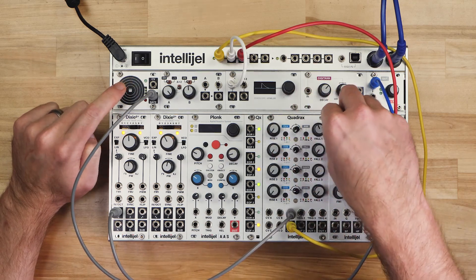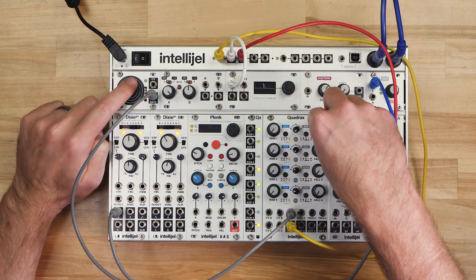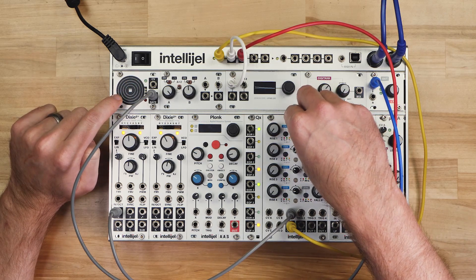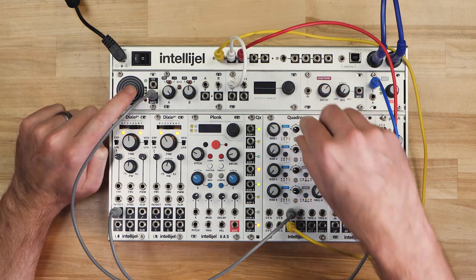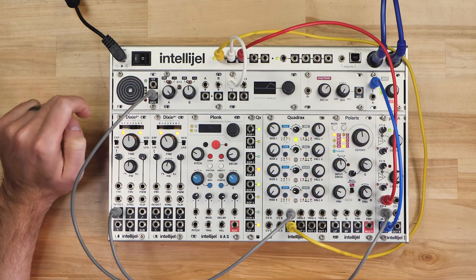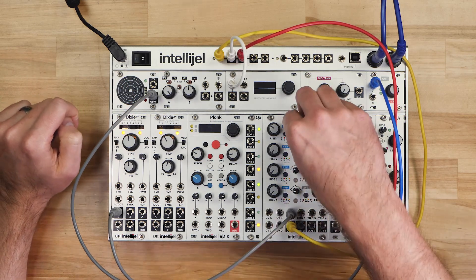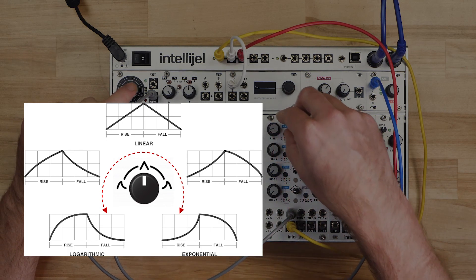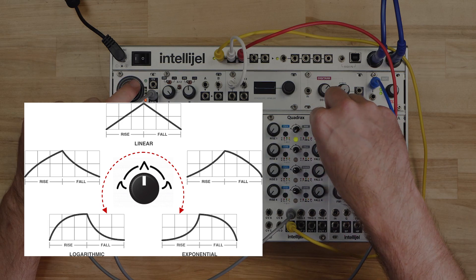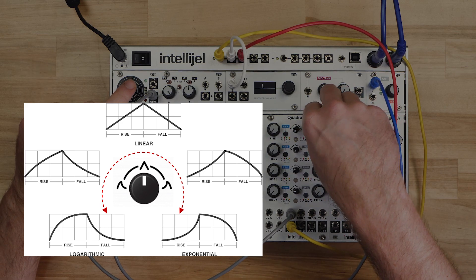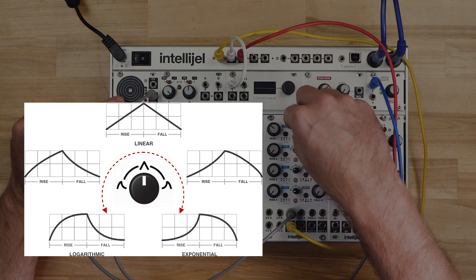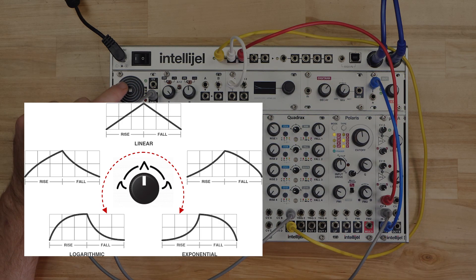Faster rise and fall times are created with the knobs counterclockwise to make things more snappy and percussive, while turning the knob clockwise slows the rise and fall times to rates more suitable for swells and sweeps. The shape knob provides a linear response at 12 o'clock, with logarithmic curves counterclockwise and exponential curves clockwise. Note that changing the response shape also preserves the envelope time, unlike some other envelope generators.